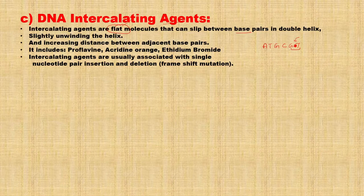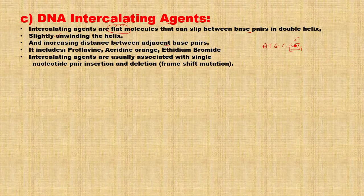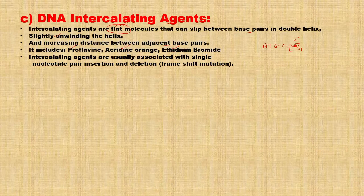As they fit in the double helix, it can lead to slight unwinding of the helix. As well as, the distance between the adjacent base pairs — for example, G and T — the distance between them will also get increased. These three are the important DNA intercalating agents, and this can be a CSIR question under the two-mark category.